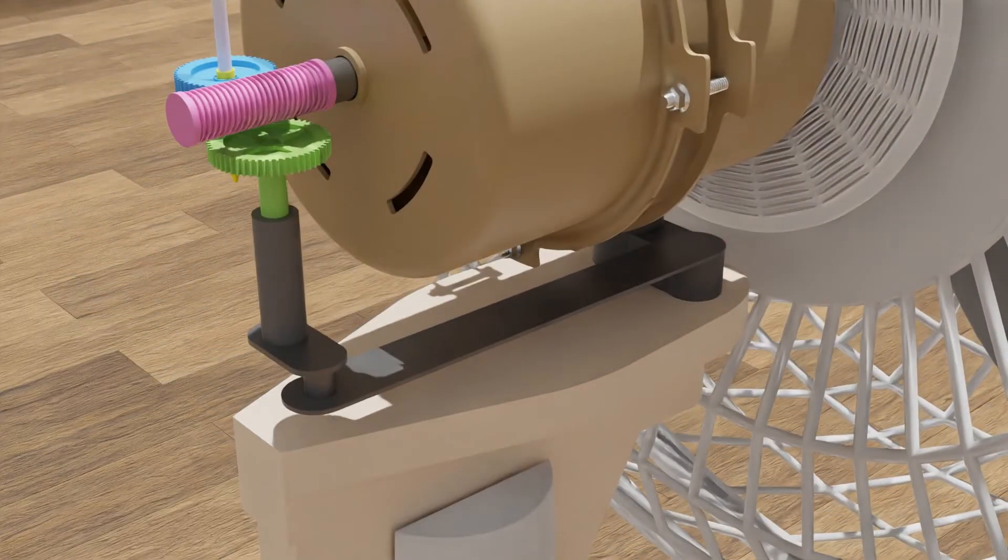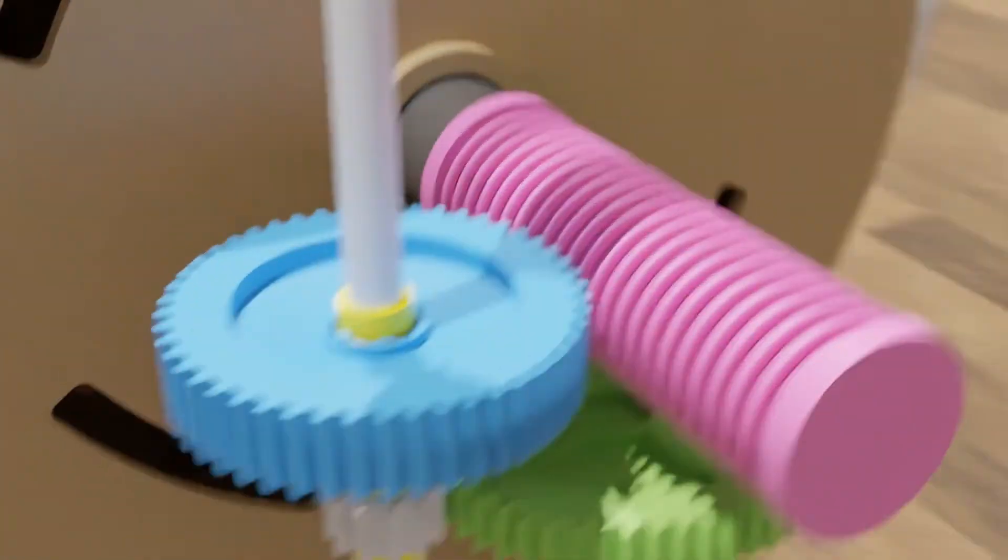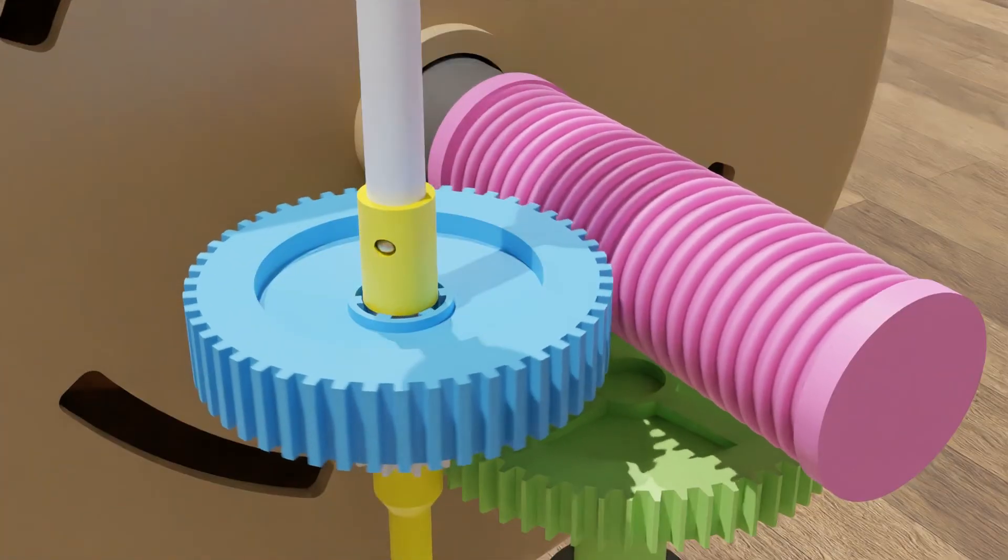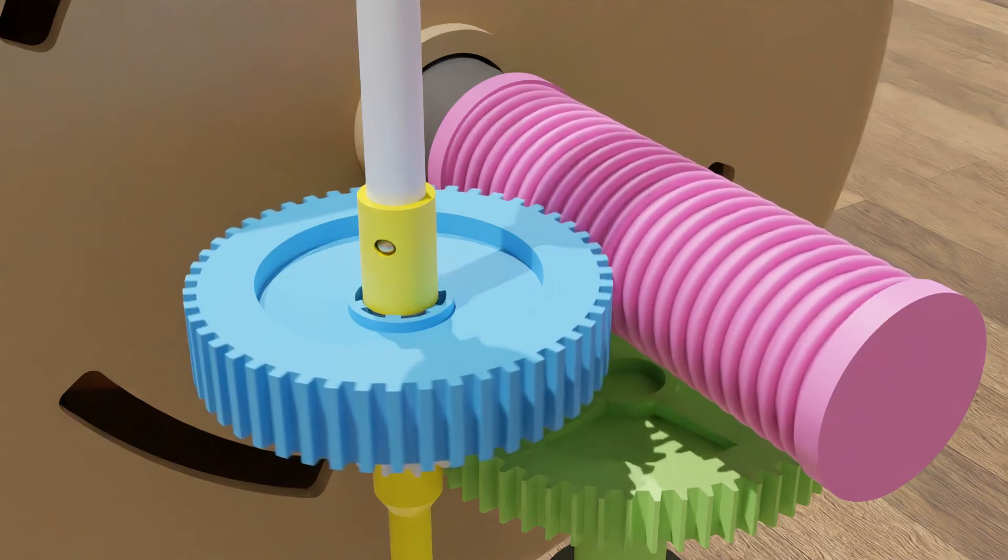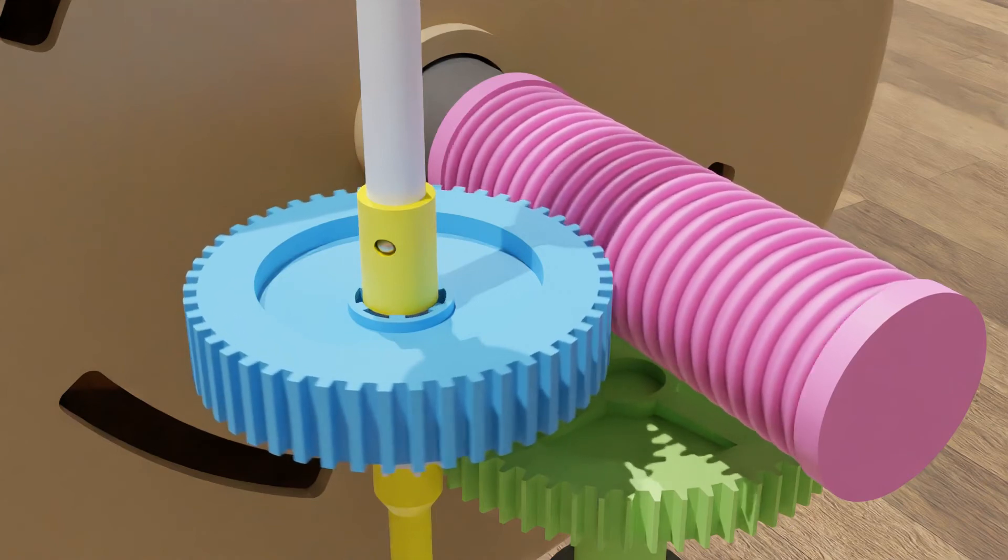But this only works when the pin is down. When the pin is up it doesn't rotate along with the worm gear so nothing below will rotate and the fan will immediately stop oscillating. Due to the perfect gear ratio on the system, the speed of the crank is much slower than the fan.